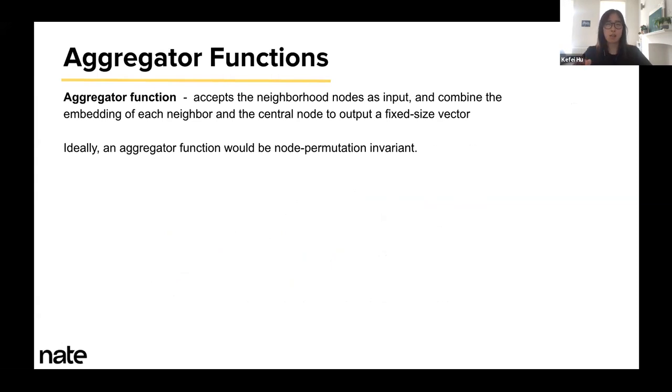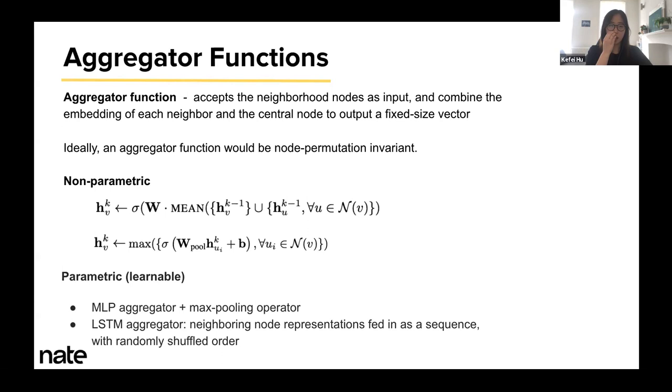Specifically, what do we mean by aggregator function? It is a function that accepts neighborhood as input, specifically a set of node embeddings from the neighborhood, and combines the embeddings to create a neighborhood-aware node embedding for the target node. As you know, the node's neighbors should have no natural ordering, so an aggregator function should be invariant to the node ordering or permutations.